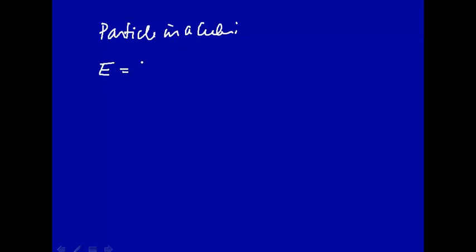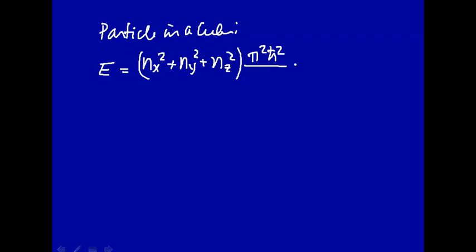Let's look at an example. Remember, in a particle in a cube — that's three dimensions — we said that the energy levels are described by three quantum numbers: one corresponding to x, one to y, and one to z. You square those and sum them, then multiply by π²ℏ² divided by two times the mass of the particle times a², where a is the edge length of the cube. This system, particle in a cube, has degenerate states — wave functions with the same energy.